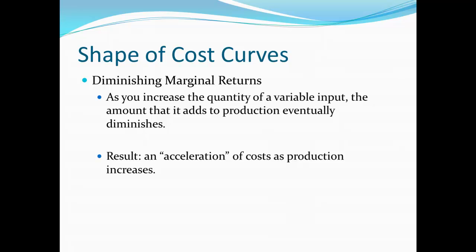For example, imagine that we have a certain set of fixed inputs — say a factory with a bunch of machinery in it — and we start out without having any laborers at all. Naturally this isn't going to produce much of anything. But then we hire a laborer and get some materials for them, and naturally we're going to produce something. Then we hire a second laborer, and it very well might be that we're more than twice as productive, because there's the possibility for these two workers to specialize more, and that could increase their productivity.